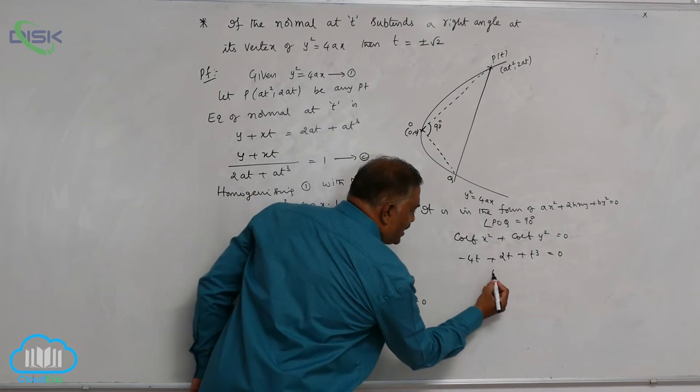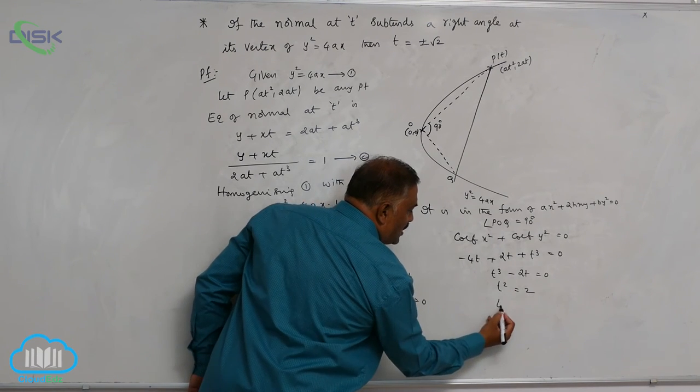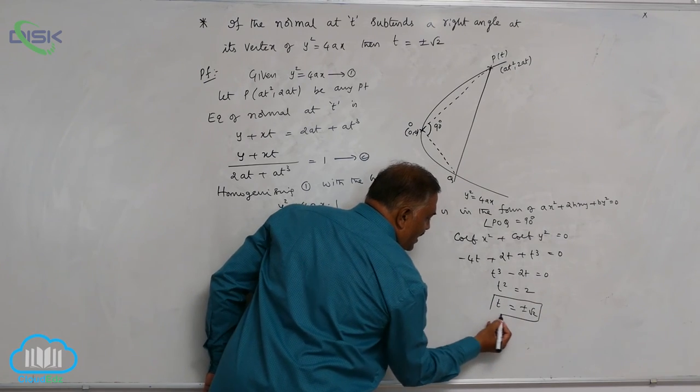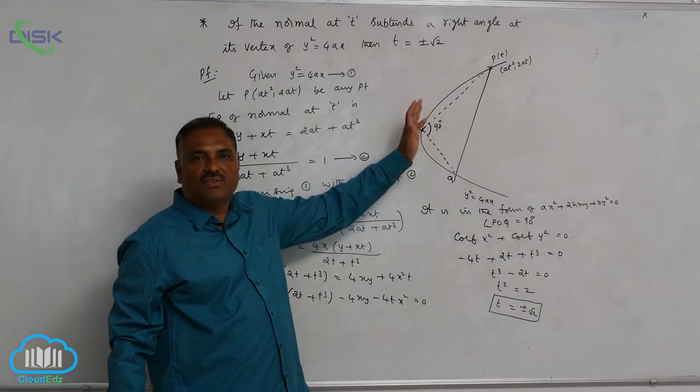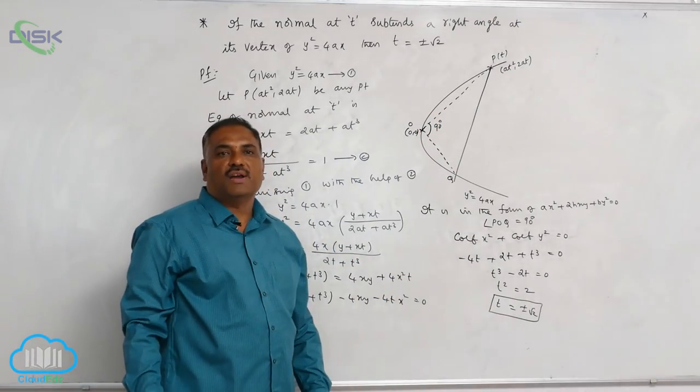So, t cubed minus 2t equal to 0. t square is equal to 2. t is equal to plus or minus root 2. A very useful result. If normal subtends a right angle at the vertex, the result is t equal to plus or minus root 2.